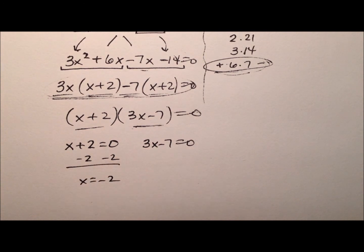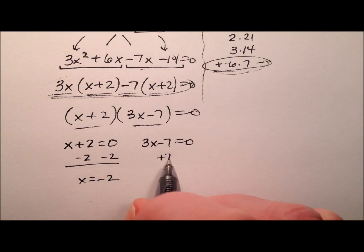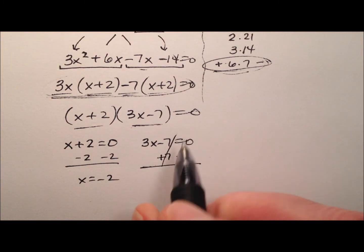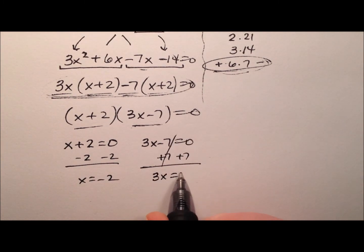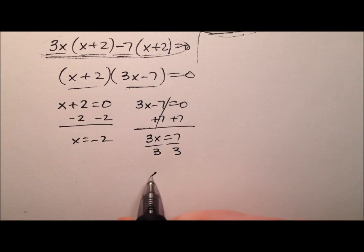The first one looks like x equals negative 2. And here we can add 7 to both sides, so we'll get 3x equals 7, and then I can divide both sides by 3 and it looks like x will equal positive 7 thirds.